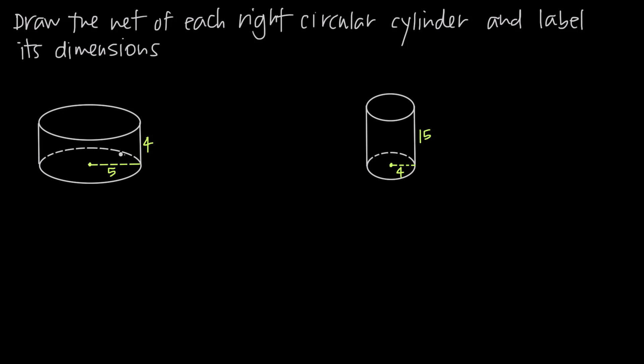In this first example, we have a right circular cylinder. We've been told that the height of the cylinder is four units and that the radius of the base of the cylinder is five units.